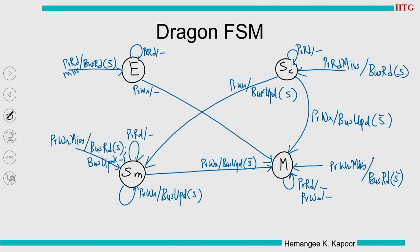We have now finished all read and write transitions from the processor side. Now for bus-side transitions in red: in state E, if we see a bus read it means a new reader has entered the system, so move to SC. In state SC, if a bus update arrives — some other cache is sending modified words for this block — pick those words up, update your local copy, and stay in SC (self-loop on bus update).